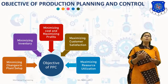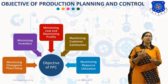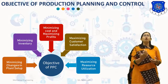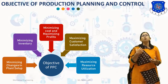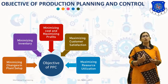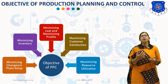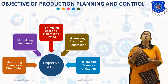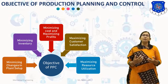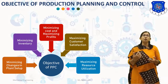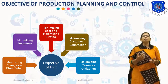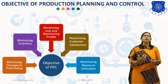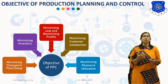The last objective is minimizing inventory. More inventory means more money blocked in idle material. Minimizing the inventory reduces the blocked money, which makes more capital available for productive investment. These are the objectives of Production Planning and Control.